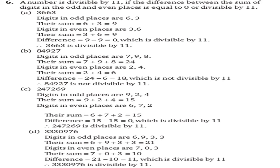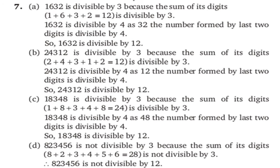Similarly solve C and D parts. Question number 7 — which numbers are divisible by 12? A number is divisible by 12 if it is divisible by both 3 and 4. For part A, the number is 1632. Sum of digits is 12, which is divisible by 3. The last two digits are 32, which is divisible by 4. So 1632 is divisible by 12. Similarly solve B, C, and D parts.